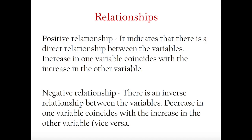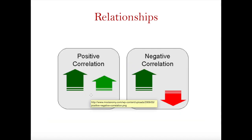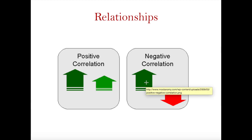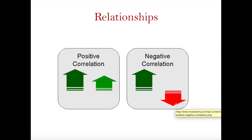A negative correlation, on the other hand, is an inverse relationship, wherein a decrease in one variable coincides with an increase in the other variable and vice versa. In a positive correlation, when one variable increases the other also increases. In a negative relationship, when one variable increases the other decreases. For example, the more your workload is, the lesser your well-being might be — so workload and well-being would have a negative correlation.